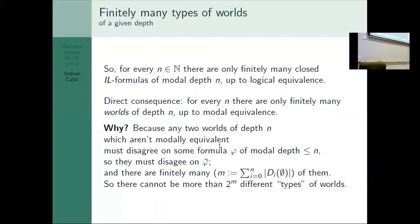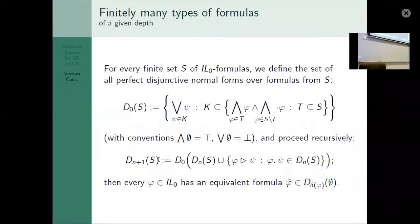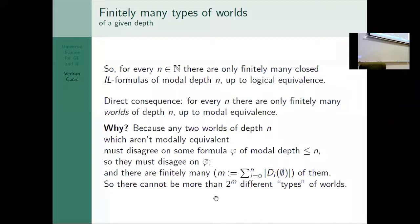The consequence is there are only finitely many types of formulas, so there are only finitely many types of worlds for any given depth. Any two worlds of depth n which aren't modally equivalent must disagree on some formula of modal depth less than n. There are only finitely many of them, because all of those sets by induction are finite. Very large, but finite. So there cannot be more than 2 to the power of the number of formulas different types of worlds, because for every formula the world can just say it holds or it doesn't hold.